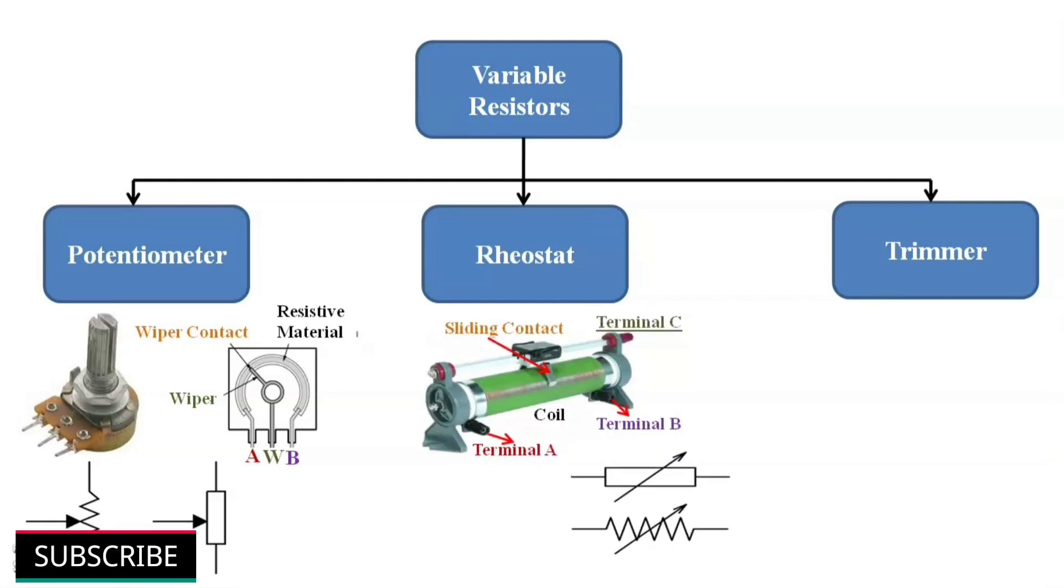Second one, rheostat. Rheostats are also known as tapped resistors or variable wire wound resistors. A resistive wire is wound around an insulating core. A wiper slides over this winding. Terminal A and B are connected at both ends to offer a fixed resistance. Terminal C is made to the wiper or sliding contact. We can obtain desired resistance value by moving slider manually. Rheostats are mostly used in speed control of heavy motors.